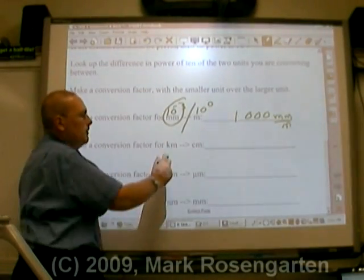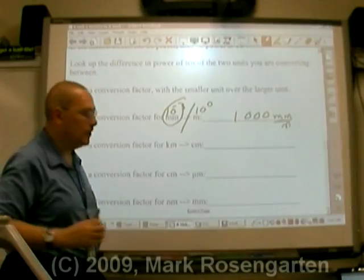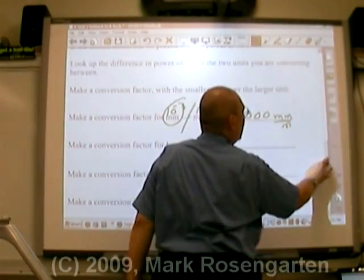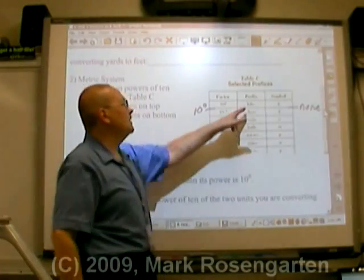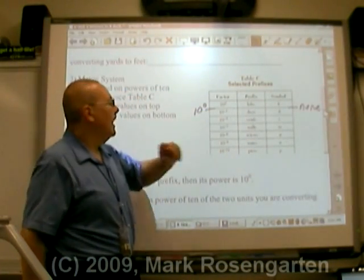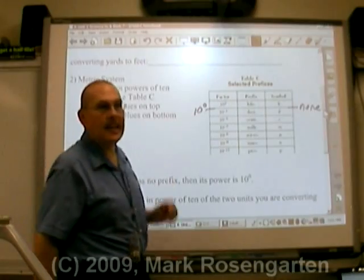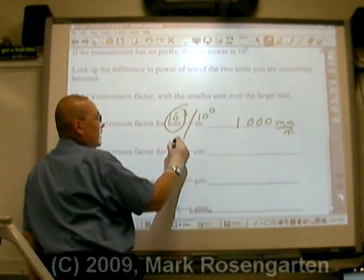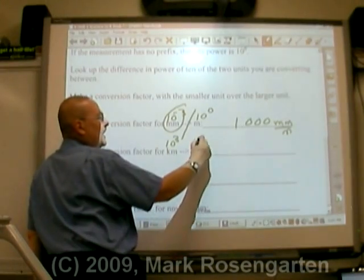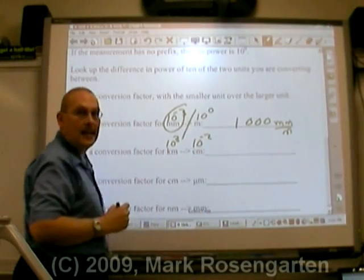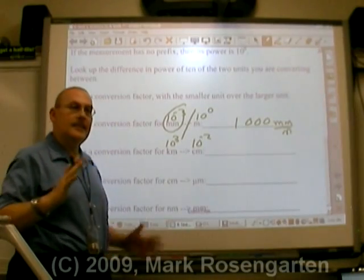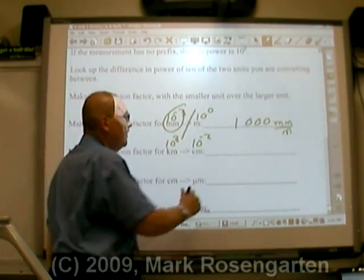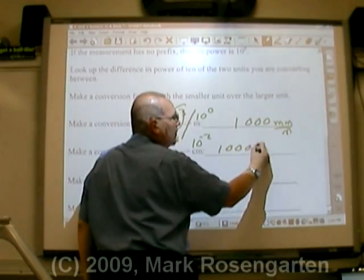For this next conversion, we're going to convert kilometers to centimeters. So let's find the factors for kilo and centi on the reference table. 10 to the third for kilo, 10 to the negative second for centi. Think of a number line, the distance between three and negative two. That's five places. That's one followed by five zeros, otherwise known as 100,000 times difference between these two units.